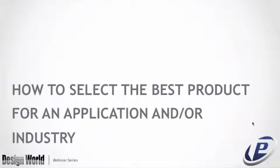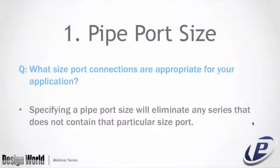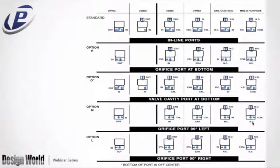How to select the best product for an application: valve specifications — six questions to get the best base valve for your application. Question one: port size. What port size connections are appropriate? Specifying a pipe port size will eliminate any series that does not contain that particular port size. Not only is port size important but where ports are located, as port connections may be easier when installing a valve. Ports like bottom orifice, bottom cavity, or 90-degree left/right make it easier to install when space is limited.